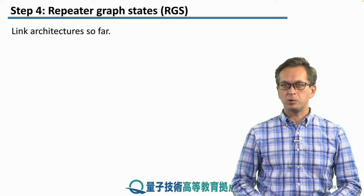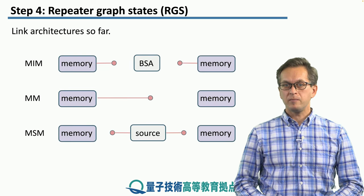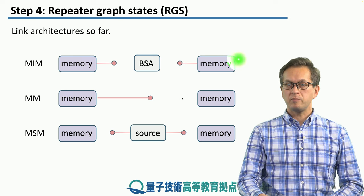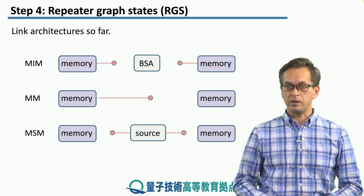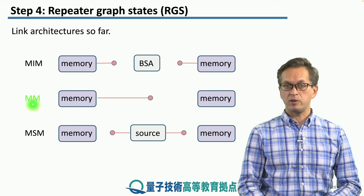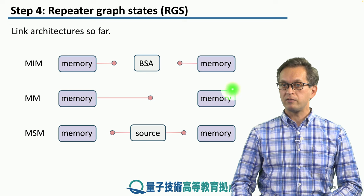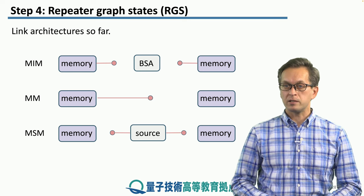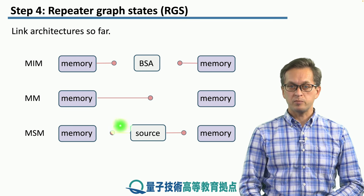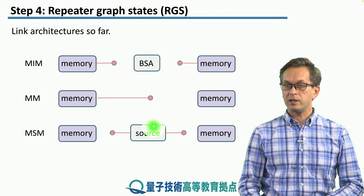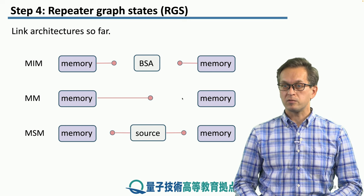Let's summarize what we have learned so far. We have considered three link architectures. The first one, MIM, had memories on both sides, and the memories emitted photons which were then traveling towards the BSA in the middle, where we performed entanglement swapping. The second architecture was Memory-Memory, MM, where one memory was the sender emitting photons, and the photons were traveling to the receiver memory, where we placed the BSA locally. And the third architecture was the Memory-Source-Memory, MSM, where we placed a source in the middle generating entangled photon pairs, which were then traveling to memories which were the receivers with local BSAs.